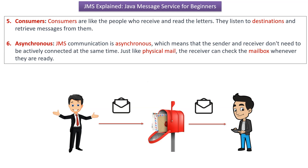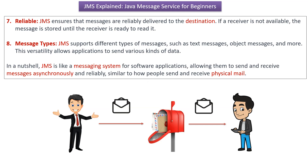JMS communication is asynchronous, which means the sender and the receiver don't need to be actively connected at the same time. Just like physical mail, the receiver can check the mailbox whenever they are ready. JMS also ensures messages are reliably delivered — if the receiver is not available, the message is stored until the receiver is ready to read it.